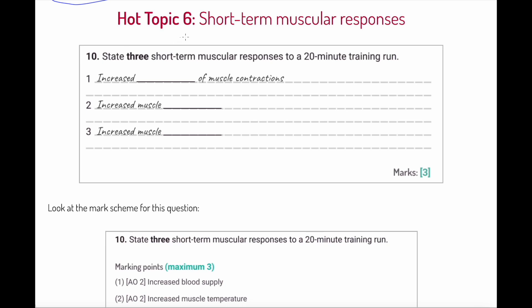What seems to be a super simple question for short-term muscular responses: state three short-term responses to a 20-minute training run. First of all, we'd expect to see an increase in strength of muscle contraction over the course of that run. Muscle contractions are going to be greater than at rest. We'd also expect that muscle temperature would increase—nothing too spectacular there. That energy-releasing aerobic respiration is going to release heat by definition.